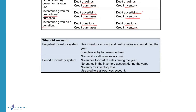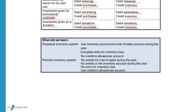In summary: when using the perpetual inventory system, the inventory account and cost of sales account are used throughout the year. Every time goods are purchased or sold, it is recorded in the inventory account so you always know exactly how much inventory remains. The cost of sales account is updated every time goods are sold or returned by debtors. In the periodic system, no cost of sales entries are recorded during the year and no entries are made to the inventory account — the opening balance stays until year-end.